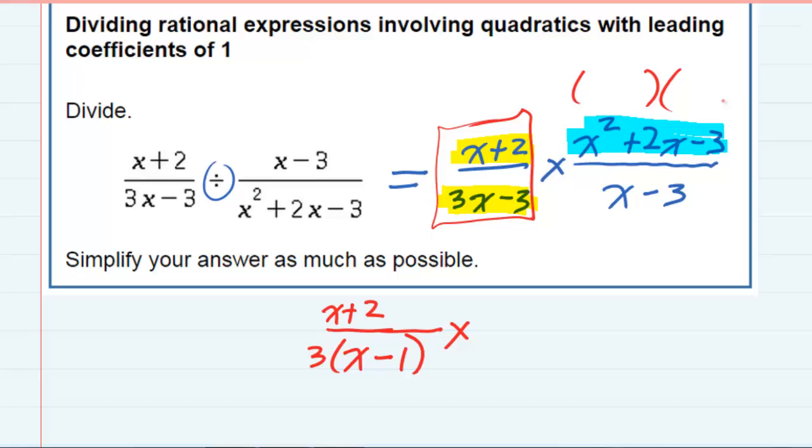This one we should be able to factor into an x and an x to give me the x squared. But I need two numbers that multiply to give me negative 3, but add up to a positive 2, and that combination is a positive 3 and a negative 1.